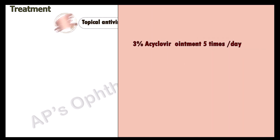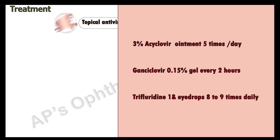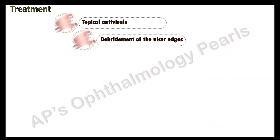Treatment is with topical antivirals in the form of 3% acyclovir ointment 5 times per day, or ganciclovir 0.15% gel, or trifluridine eye drops 8 to 9 times per day. Debridement of the ulcer edges with a dry cotton-tipped applicator helps in reducing the viral load and speeds resolution. Lubricants may be used to relieve discomfort.